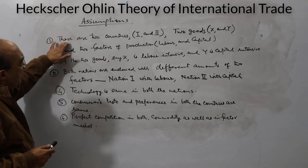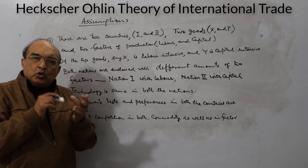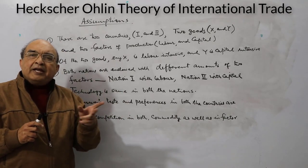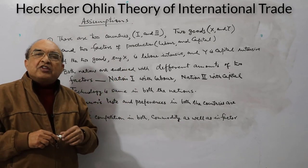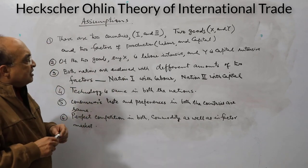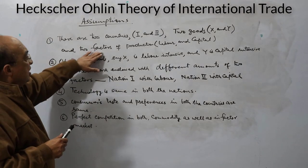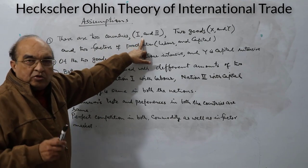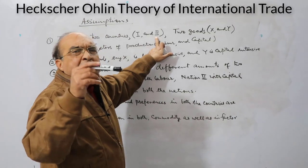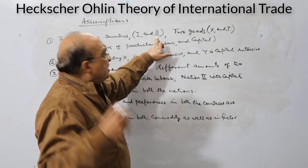The first and very basic assumption is that it is a two-by-two-by-two model: two countries, two goods, and two factors of production. In the Ricardian theory only labor was used as a factor of production; here there are two factors. The two countries can be called Nation One and Nation Two — for example, India and the US, or any two countries with different factor endowments.